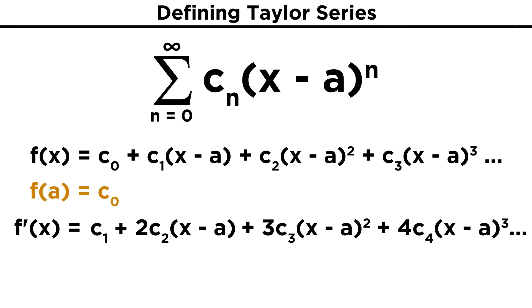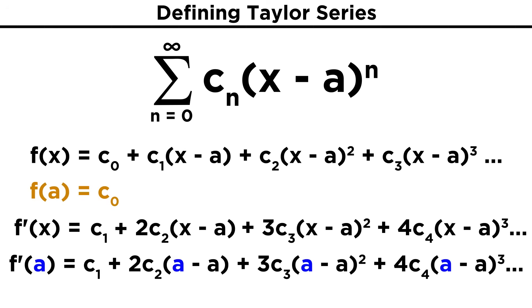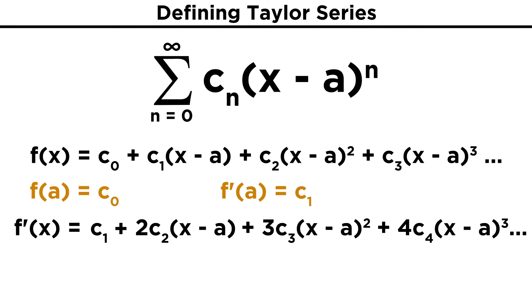Now with this expression, which represents the first derivative of the function, if we plug in a, all of these terms will disappear, just like when we plugged a into the original function. The only thing left is c one. So f prime of a, or the derivative of f evaluated at a, equals c one.